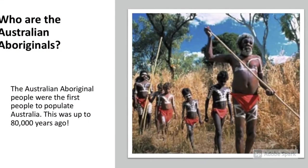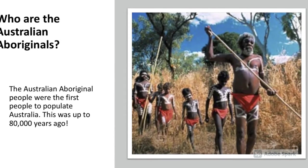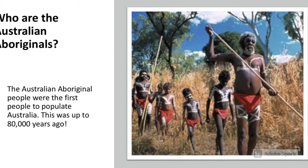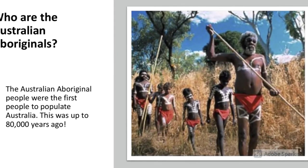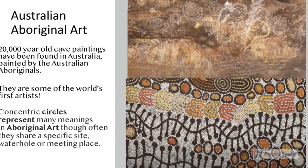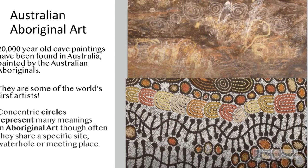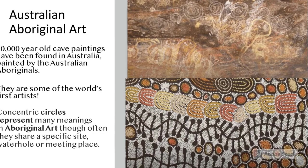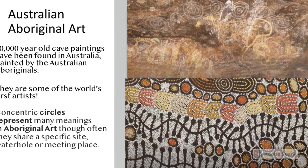And who are the Australian Aboriginals? The Australian Aboriginal people were the first people to populate Australia. This was up to 80,000 years ago. 20,000 year old cave paintings have been found in Australia painted by the Australian Aboriginals. They are some of the world's first artists.